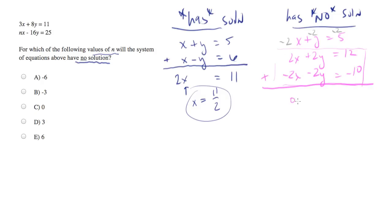2x minus 2x is 0x, 2y minus 2y is 0y equals 2. And what you'll end up with is 0 equals 2. There's no variables in it, and it's not true. So there's no solution.